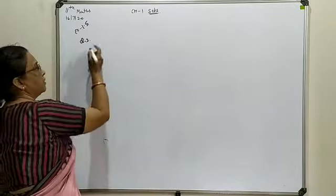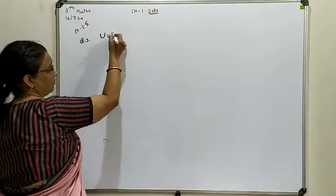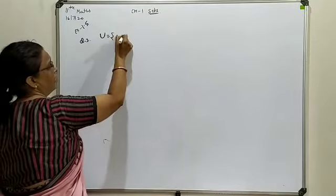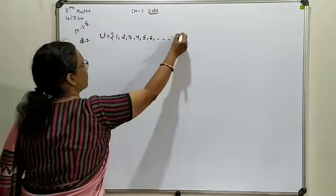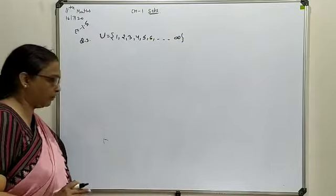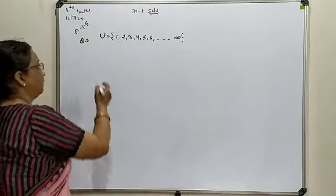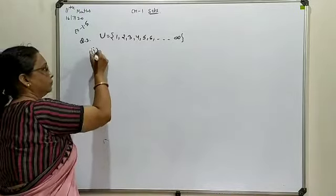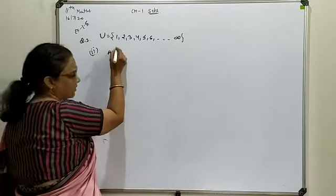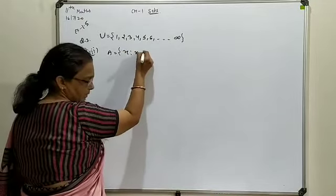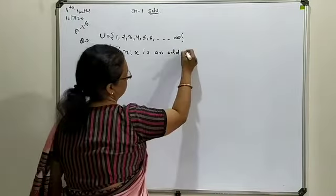For all the parts, suppose that your universal set is the set of natural numbers, containing all such elements. Now, we look at the second part, in which the set A is defined as: A = {x : x is an odd natural number}.